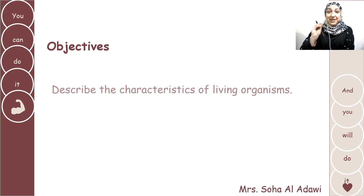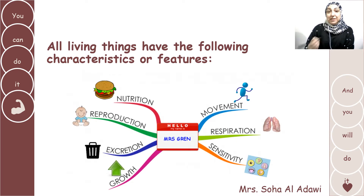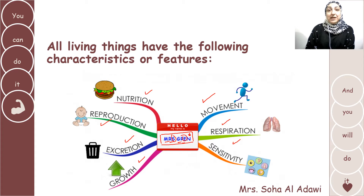All living organisms, all living things, must have these seven features or seven characteristics. It's very simple to remember them because you are simply going to remember MRS GRAM. M stands for movement, R for respiration, S for sensitivity, G for growth, R for reproduction, E for excretion, and N for nutrition.